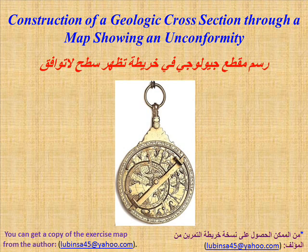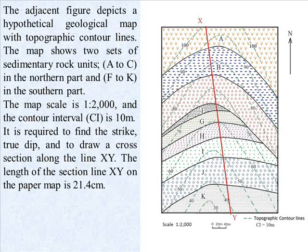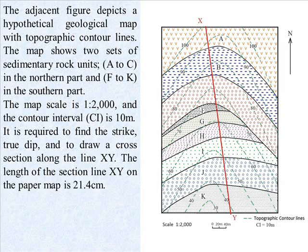Construction of a geologic cross-section through a map showing an unconformity. The adjacent figure depicts a hypothetical geological map with topographic contour lines. The map shows two sets of sedimentary rock units: A to C in the northern part and F to K in the southern part. The map scale is 1 to 2000 and the contour interval is 10 meters.